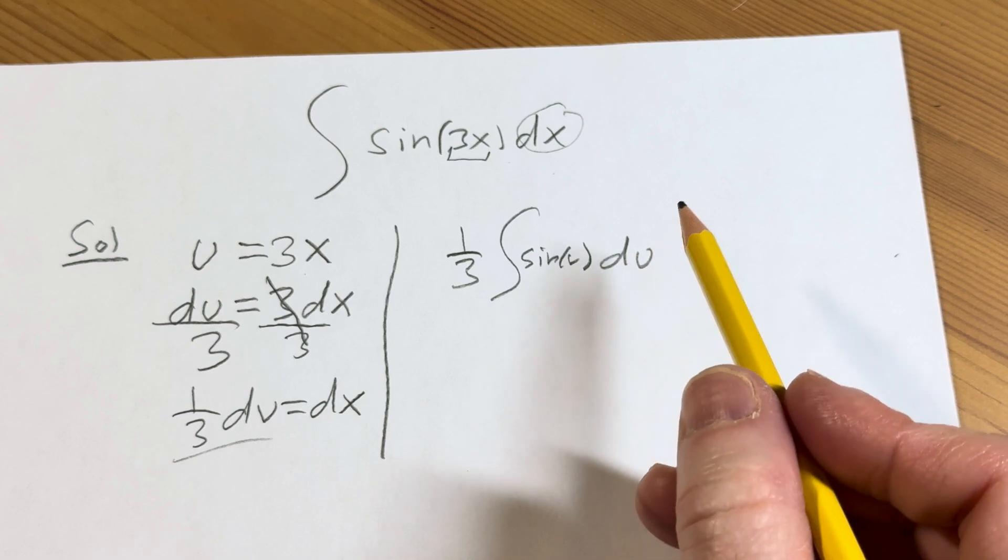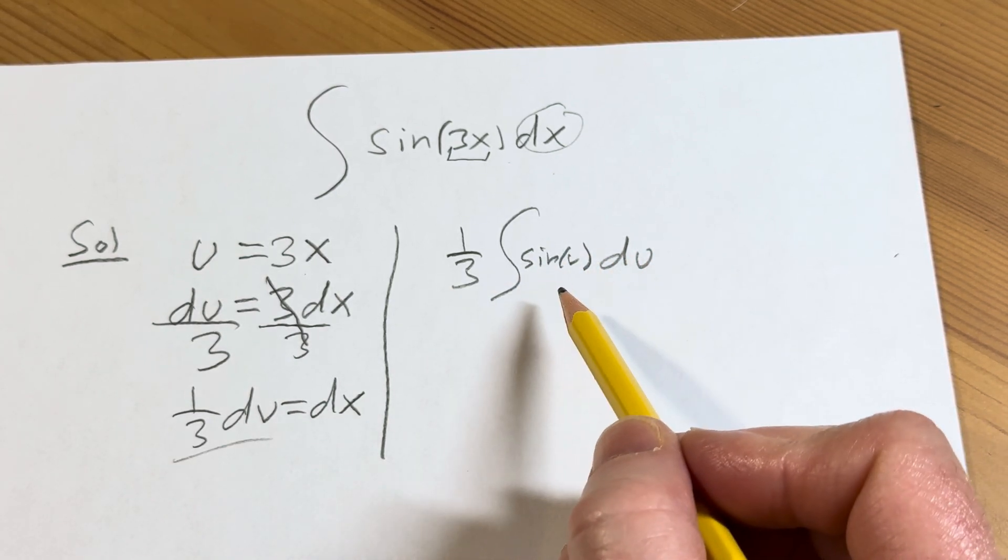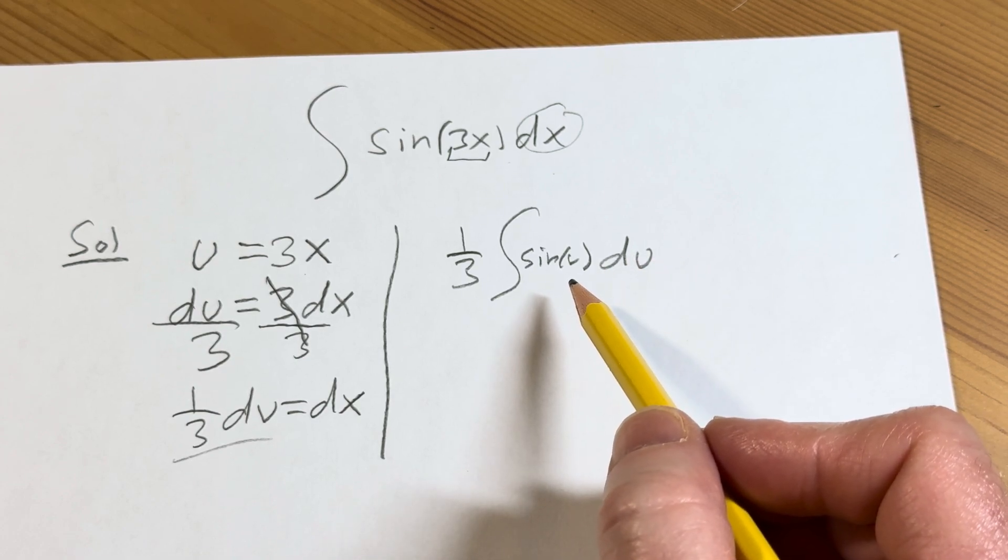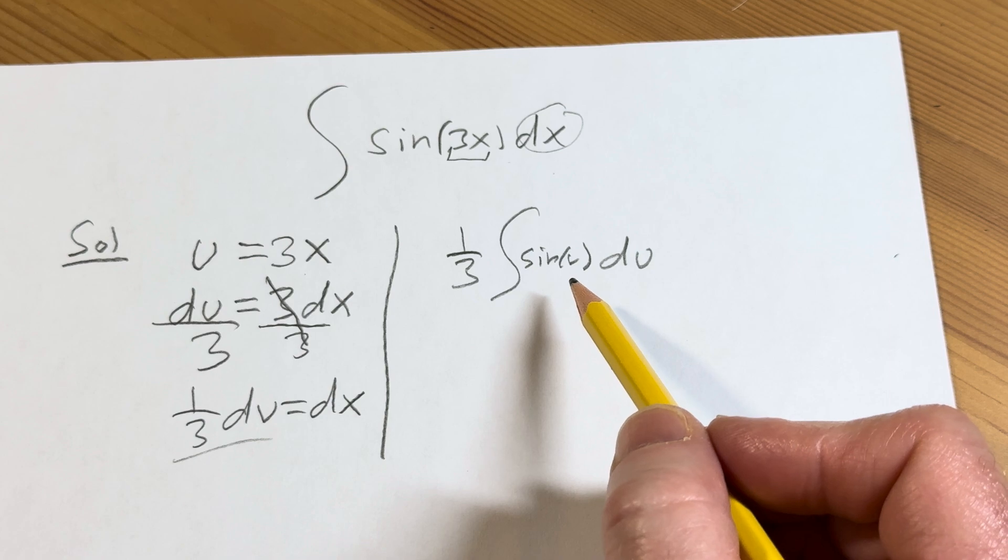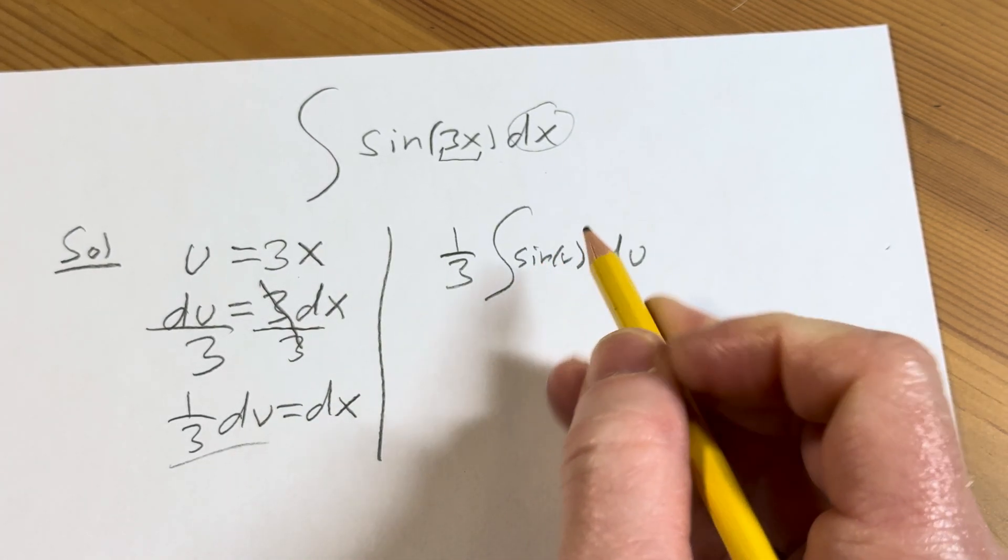We're trying to integrate sine. So you're trying to find a function whose derivative is sine. Well, the derivative of cosine is negative sine. But the derivative of negative cosine is going to be negative negative sine, which is a positive sine. So this is going to give us a negative cosine.